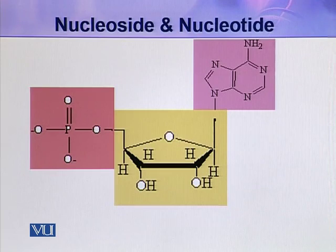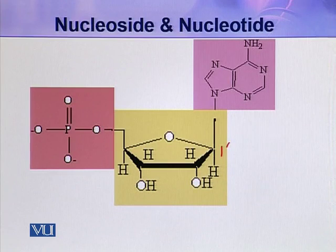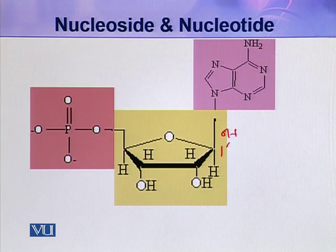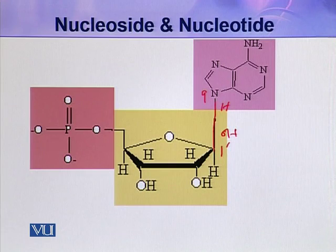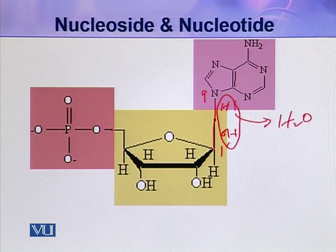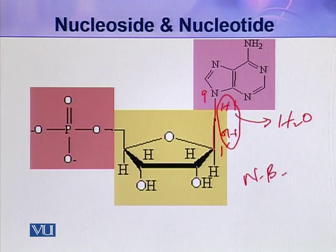Now let us see how these three components are joined together. As you can see, this is the 1' carbon, and at this 1' carbon an OH group is present. The nitrogen of the nitrogenous base attaches to the 1' carbon of the pentose sugar. This is nitrogen number 9, which contains a hydrogen atom. The hydrogen of the nitrogenous base and the hydroxyl of the pentose sugar combine, eliminating a water molecule, joining the pentose sugar and nitrogenous base together. This attachment is called an N-beta-glycoside linkage.